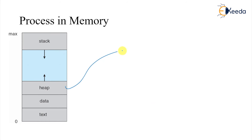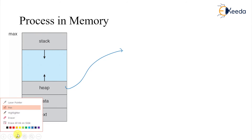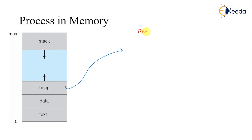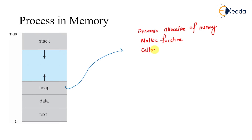The last part is the heap, and the heap is used for dynamic allocation of memory. Dynamic allocation means memory is allocated at runtime. We have standard functions for this in C language — malloc and calloc. All data structures implemented in C language allocate their memory using malloc and calloc functions.